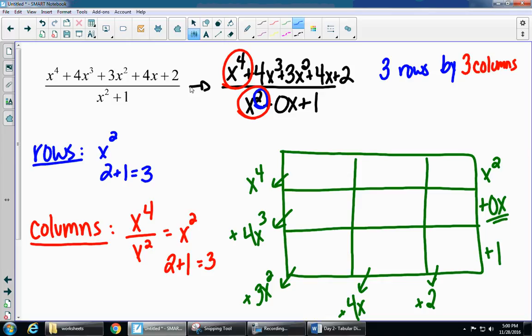So remember, we always start in the top left corner. The only possibility is for this top left to be an x to the fourth. So what times x squared gave me that x to the fourth? x squared. As soon as you have a top piece, you're going to multiply. x squared times x squared is x to the fourth. We have that. x squared times 0x. Anything times 0 is going to be 0. And we're going to get 0x cubed, just so we're keeping it nice and organized. We want to keep our variables there, even though we know it's 0. And then lastly, x squared times 1 is x squared.